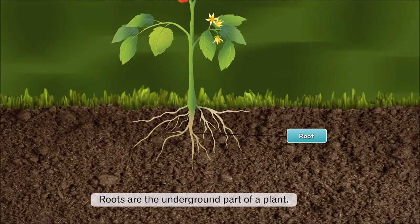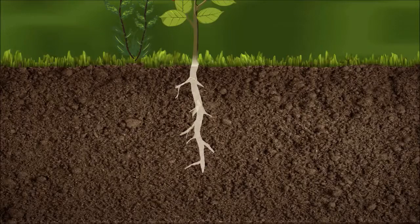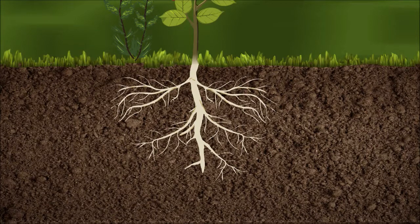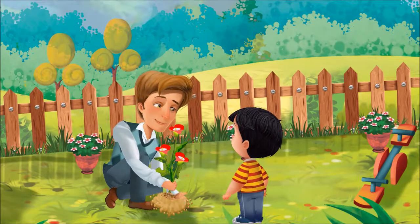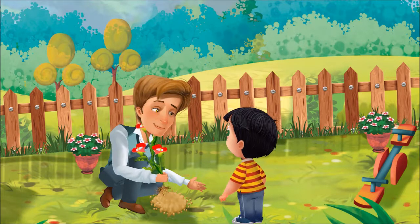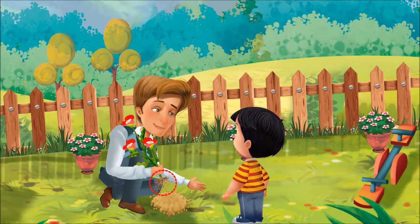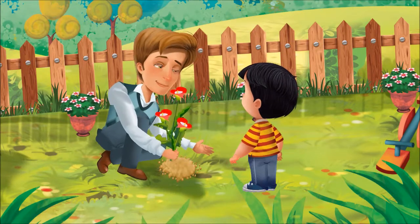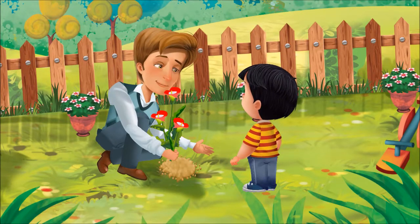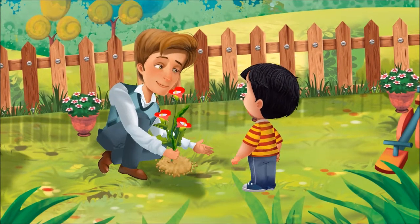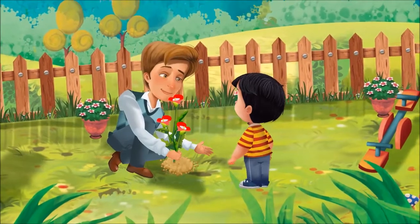Roots, as you already know, are the underground part of a plant. It is difficult to uproot a plant from the soil because of the presence of the root. That is why Sid's father needs to put the root of the sapling into the soil. Now that we know the answer to Sid's question, let us study more about roots.